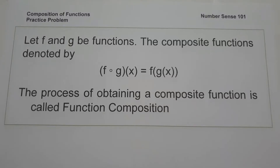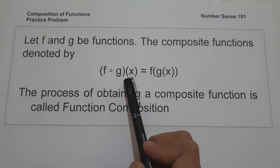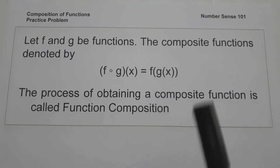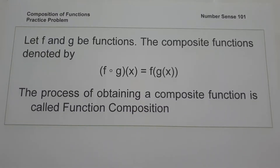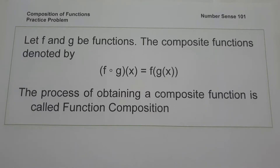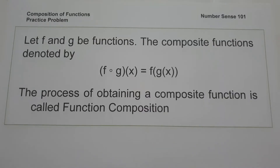In today's video, we are going to have a basic introduction on composition of functions. When we say composition of functions, it is denoted by f circle of g of x, and that is f of g of x, wherein f and g are functions. The domain of the composition function f circle of g is the set of all x such that x is in the domain of g, and g of x is in the domain of f. The process of obtaining a composite function is called function composition, and this is the basic concept you need to know in simplifying composition of functions.